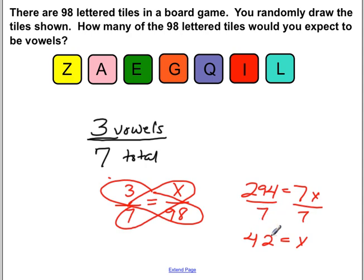So there are 42 vowels in a group of 98 lettered tiles. So it says, how many of the lettered tiles would you expect? So do we know that there's actually 42? No. But based on seven, we know three out of seven were. So we could say it's proportional to 42 over 98. So 42 vowels out of 98 lettered tiles. Obviously, we're not sure if that's accurate, but based on the seven, then it would be an estimate, or a guesstimate for that matter.